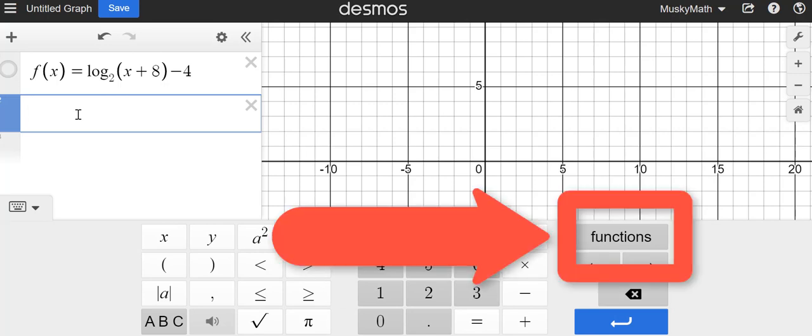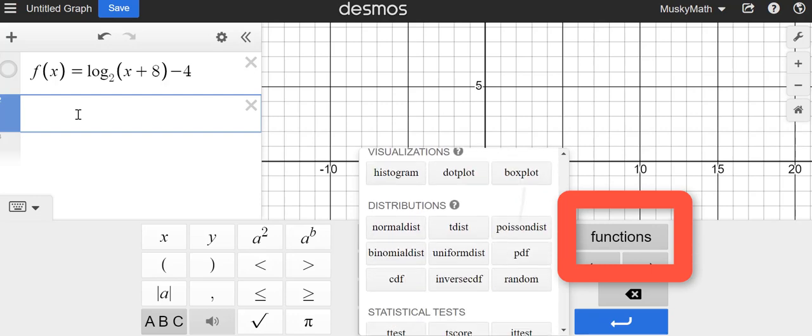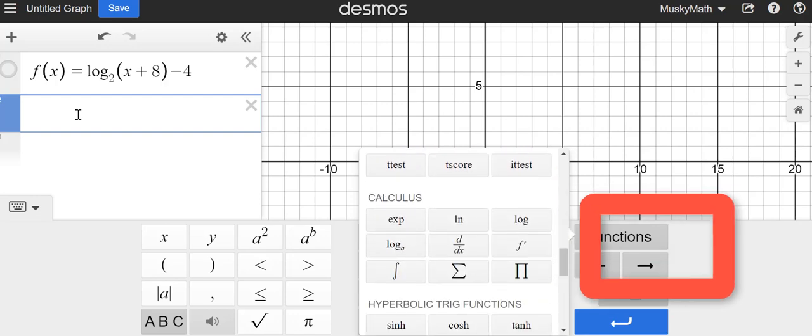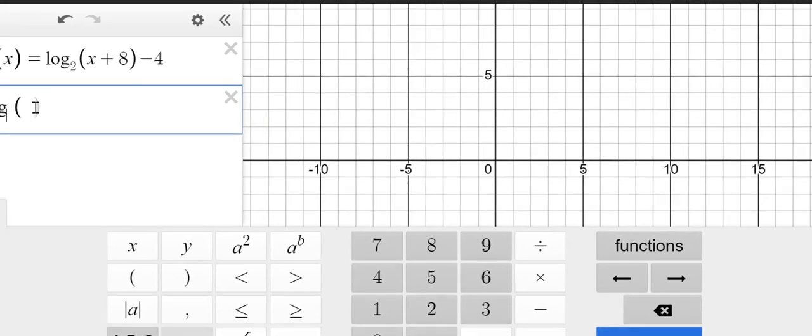Now, to get to the log part, you're gonna go over to the right where you see the word functions, and scroll all the way down until you see the calculus list. All right, at least that's where it is here in 2024. So you'll see two options there, and we're gonna go with log base A. Boom, so you hit that.